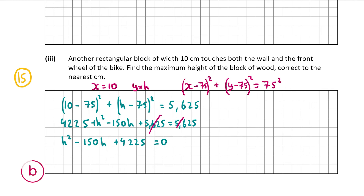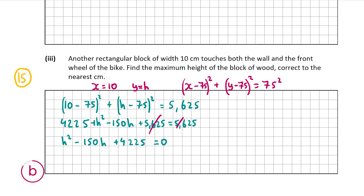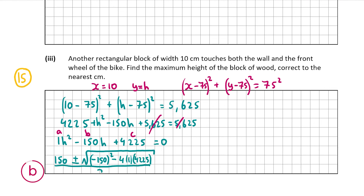This is a quadratic trinomial, so we use the quadratic formula from page 20 of the formula and tables book: minus b plus or minus the square root of b squared minus 4ac, all over 2a. Here a equals 1, b equals negative 150, and c equals 4225. Substituting: minus negative 150 gives positive 150, plus or minus the square root of 150 squared minus 4 times 1 times 4225, all over 2.